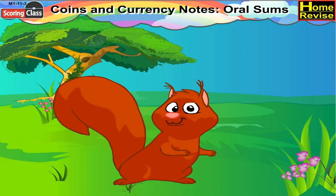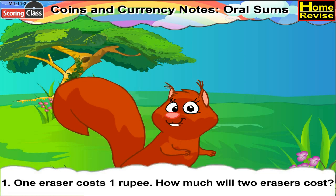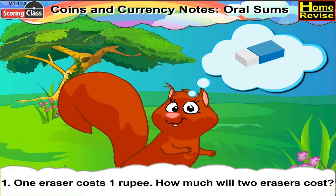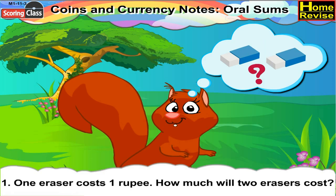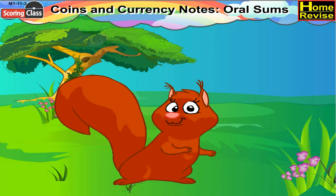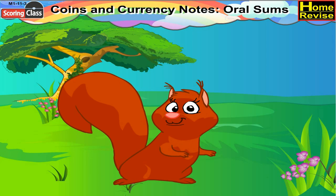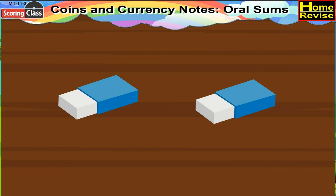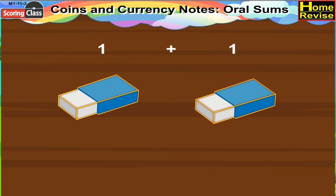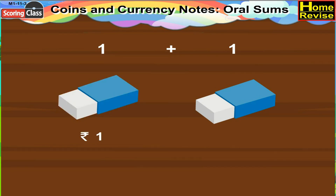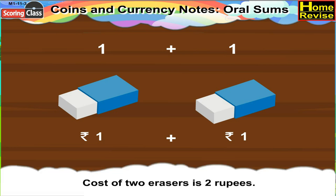Coins and Currency Notes — Oral Sums. Number 1: 1 eraser costs 1 Rupee. How much will 2 erasers cost? We know the cost of 1 eraser is 1 Rupee, and we have to find the cost of 2 erasers. 2 erasers means 1 eraser plus 1 eraser, so the cost would be 1 Rupee plus 1 Rupee. The cost of 2 erasers would be 2 Rupees.